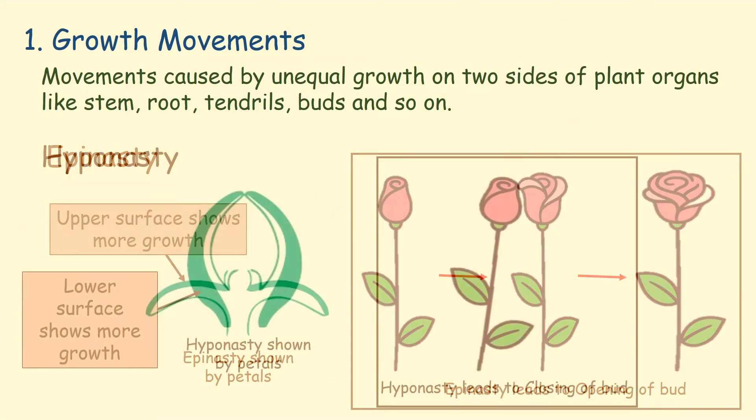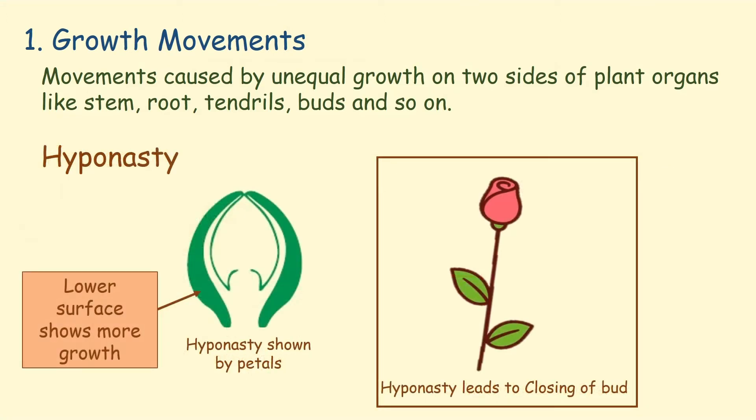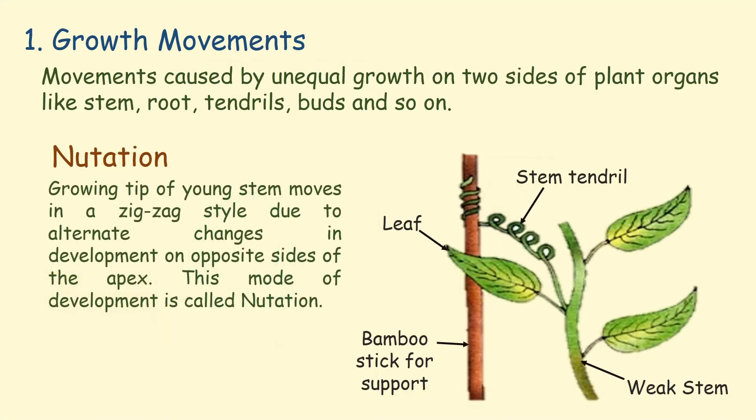Hyponasty is the opposite of epinasty. If development in the lower surface area of the leaf in bud condition is more than that of the upper surface area, then the bud will stay closed. The growing tip of the young stem moves in a zigzag style due to alternate changes in development on opposite sides of the apex. This mode of development is called nutation.